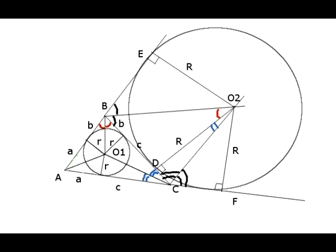This diagram shows one of the three excircles of triangle ABC. This excircle with center O2 is tangent to the same three lines as the incircle, but it lies on the other side of segment BC, which is opposite to vertex A. Since both the incircle and excircle have their centers O1 and O2 at intersections of angle bisectors of the corresponding sides, and these angles are complementary, the angles marked with red have equal measurement, as do angles marked with blue.